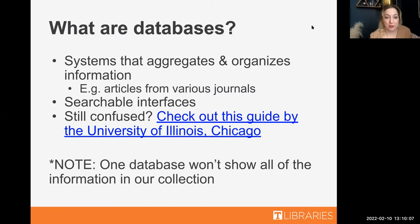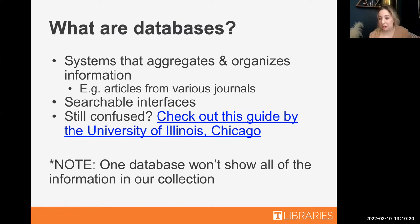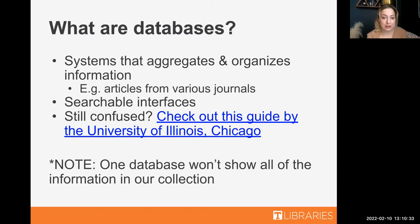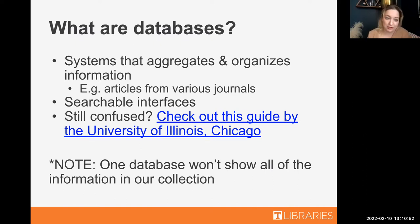This brings us to our next topic: what databases actually are. They are systems that aggregate and organize information — for example, articles from various journals. They are searchable, which means you can input keywords and it will search through the information within it to find sources that mention those things. There is a guide by the University of Chicago, Illinois that goes into more detail. One database won't show all the information in our collection, so if you want a comprehensive list of sources, you'll probably have to check several different databases.